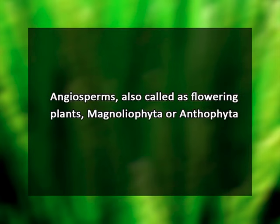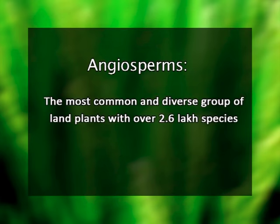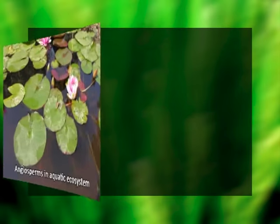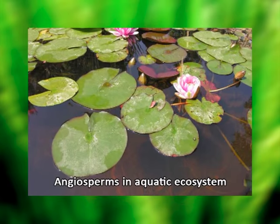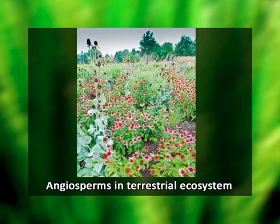The angiosperms, sometimes also called flowering plants, magnoliophyta, or anthophyta, are the most common and diverse group of land plants with over 2.6 lakh species distributed all over the world. These angiosperms grow virtually in every habitable region and are dominant in some aquatic and most terrestrial ecosystems.